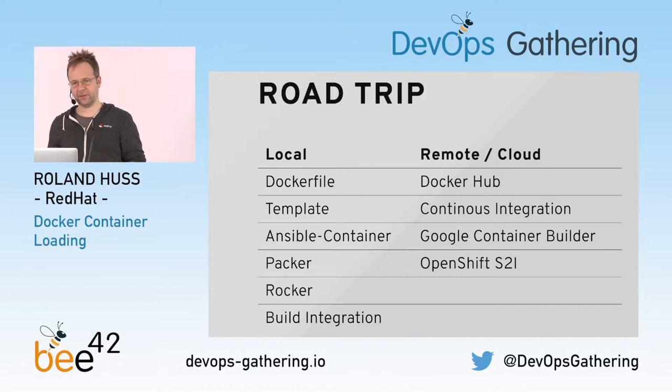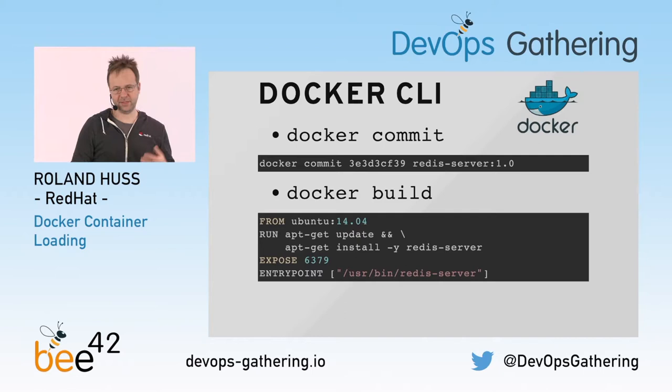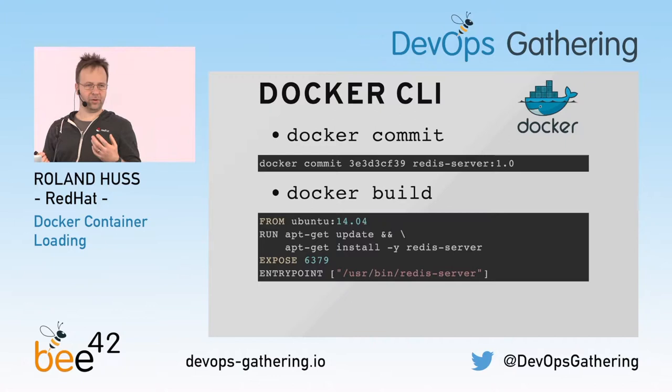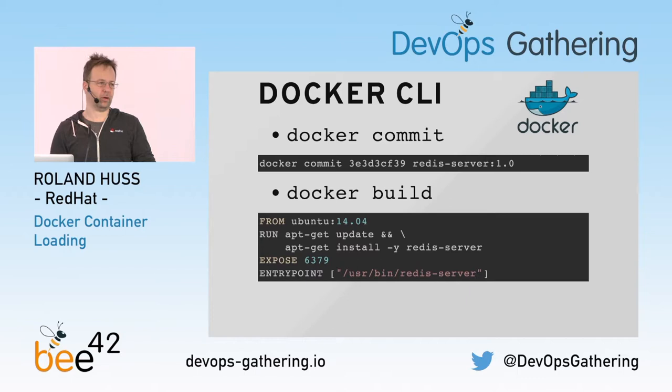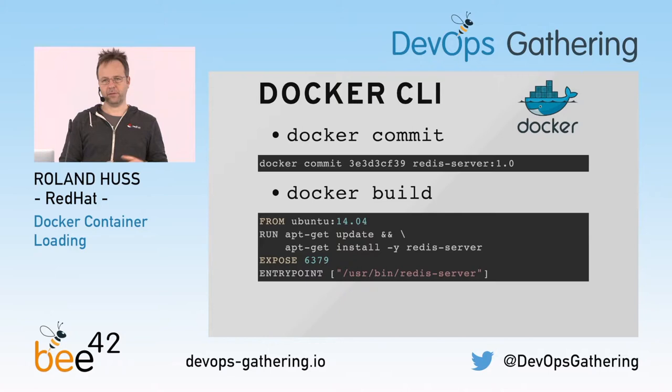We all know Docker is based on containers, or better, images from which the containers are created. There are two standard ways how you can create Docker images. You can start a container, stop it, and then commit the container to make an image out of it. This is normally not recommended because it's not easily reproducible — you cannot reproduce the image itself. But we will see later that it still makes sense to use this technology.